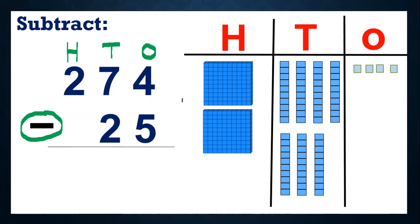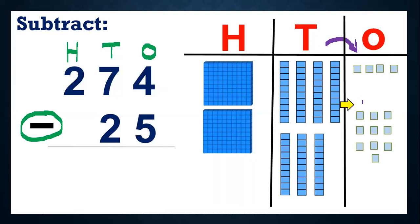Now we need to remove five from four. Can we do that, children? No, right? Here we have only four blocks of ones, so we can't cut five. So what do we do? We can borrow one ten from the tens place. So when we borrow one ten from the tens place, we will get ten ones. So ten ones plus four we already have — that makes 14 ones now. So from 14 we can remove five. Because I borrowed one ten from tens place, before I had seven tens, but now I have only six tens.